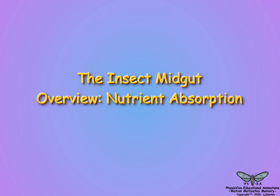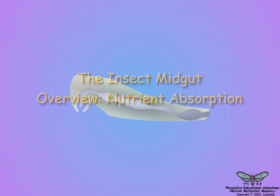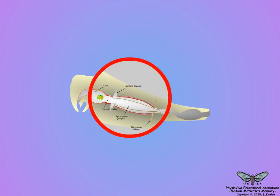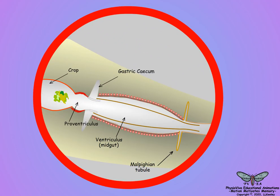This scene will summarize the physiological mechanisms by which insects regulate nutrient release to ensure efficient food digestion. As stated earlier, the goal of digestion is to maximize the release and absorption of nutrients from food. A magnification of the crop, proventriculus, gastric cecum, ventriculus, and malpigian tubules will illustrate food digestion and nutrient absorption.